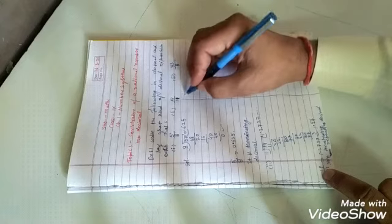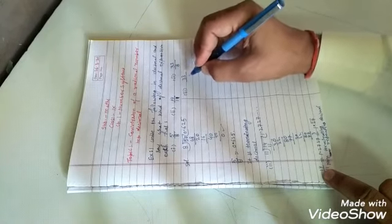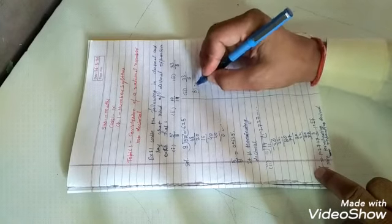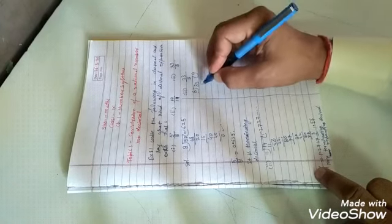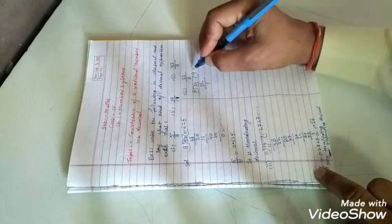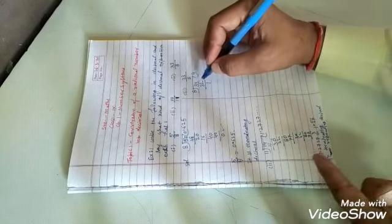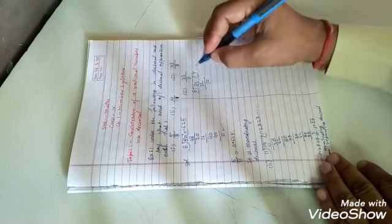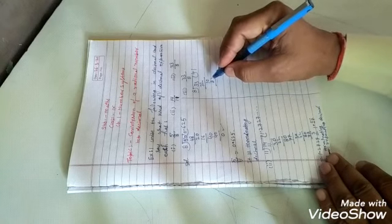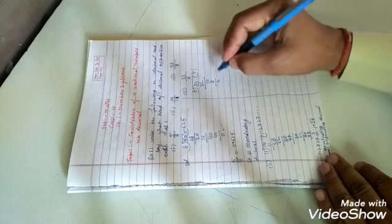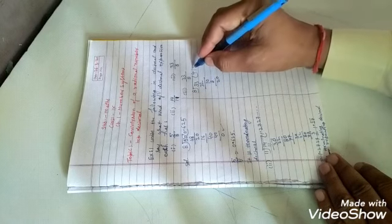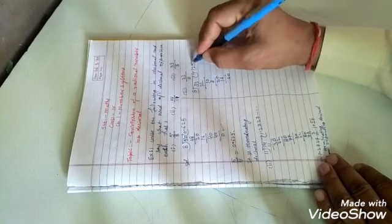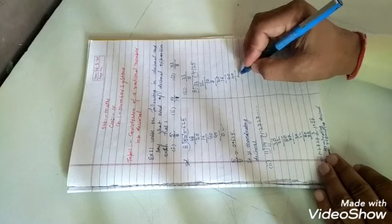Third part: 33 upon 8. We divide 33 by 8. 8 times 4 is 32, remainder 1. 1 is less than the divisor. Take decimal and write 0. 8 into 10 is 8, remainder 2. Write 0. 8 times 2 is 16, remainder 4. Write 0. 8 times 5 is 40, remainder 0.